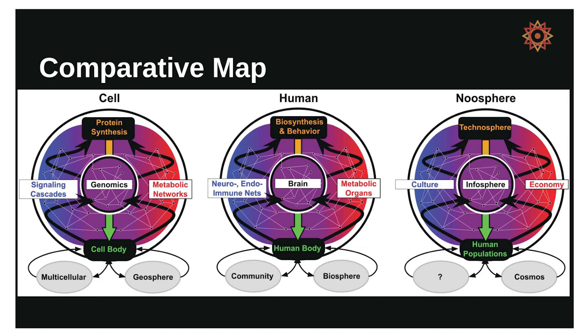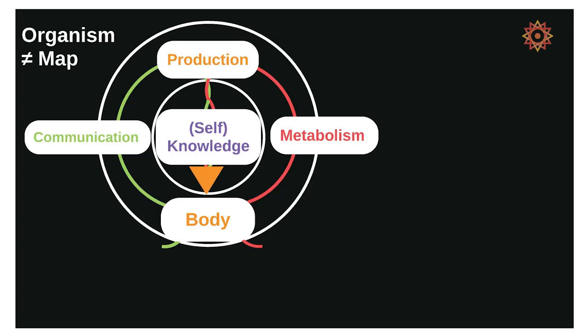That's the conceptual map we've created — this slightly different version emphasizes the networks and connectivity between different aspects of the systems. Part of the goal is to apply this map across different scales: we can see how the cell utilizes these same processes in the context of its geosphere and its multicellular neighbors; apply the same concept to the human being within its biosphere and social community; and then at the noosphere level, where perhaps the infosphere mediates the relationship between culture and the economy, engaging with technology in the technosphere as we come into contact with the larger cosmos. And there's one open question I'll leave for Brian or Clement: what do you call a population of noospheres in the cosmos?